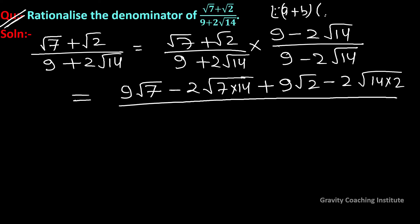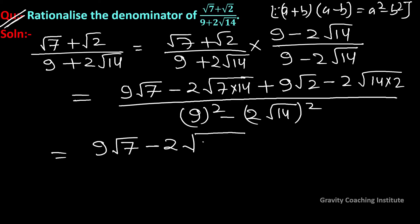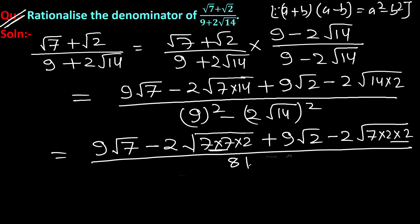The identity (a + b)(a - b) = a² - b² is applied. So the denominator becomes 9 whole square minus (2√14) whole square, which equals 9² minus (2√14)². So 9² is 81.